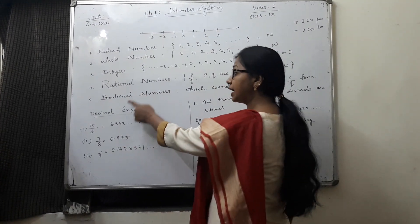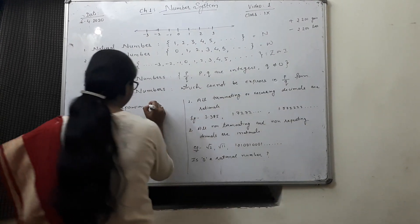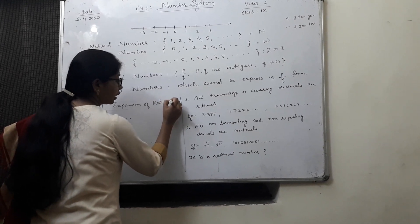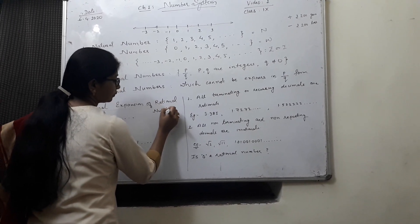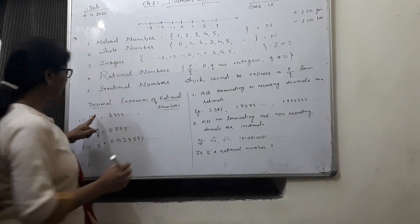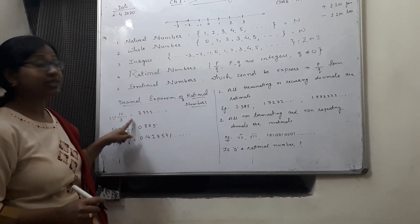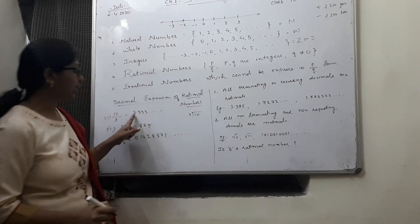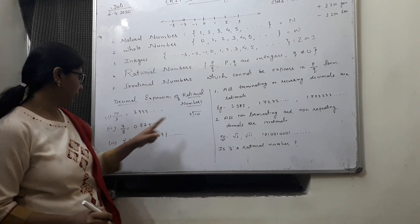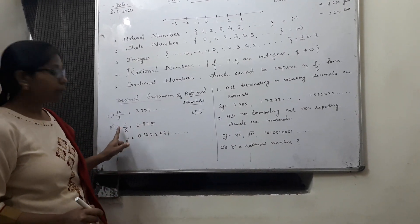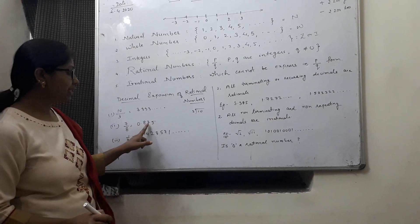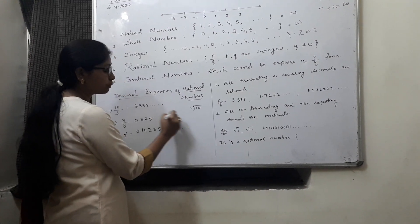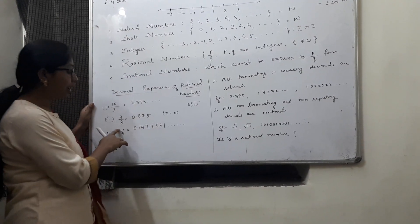Now, let us see the decimal expansion of rational numbers. 10 by 3. When you find out its decimal expansion, divide it by 10 by 3, you will get 3.33 recurring number. 7 by 8, the answer is 0.875. Here we find out the remainder is equals to 0.